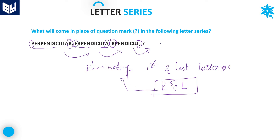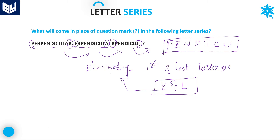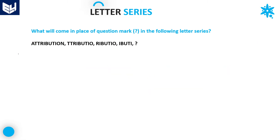After eliminating R and L from the third term, the fourth term will be P-E-N-D-I-C-U. This is the fourth term in this sequence. The logic being followed is that every time the first and last letters are eliminated from the given word. So in order to get the fourth term, eliminate the first and last letters from the third term, giving the answer P-E-N-D-I-C-U.